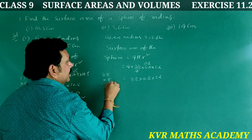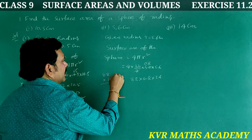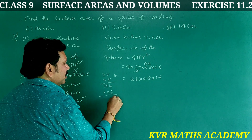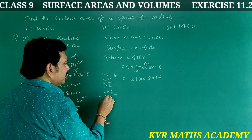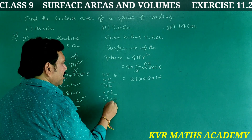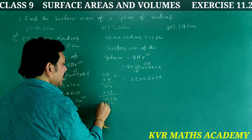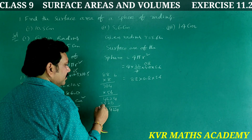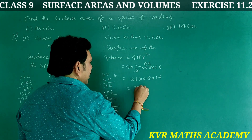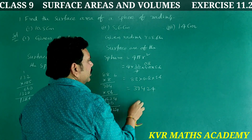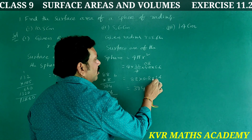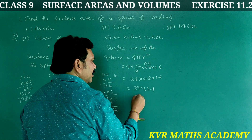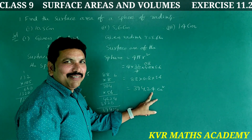88 × 8 = 704. Then multiplying by 5.6: working through the steps gives 3942.4. With the decimal adjustment, that is equal to 394.24 — written as 3942.4 centimeters square.